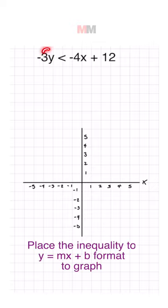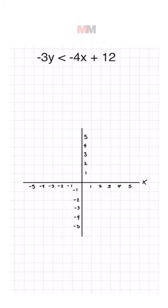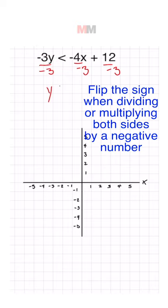So that negative 3 is there being multiplied to that y. All you got to do is divide by negative 3 to get y by itself. I showed this example on purpose because I want you guys to remember that when you are dividing by a negative, you have to flip the inequality.